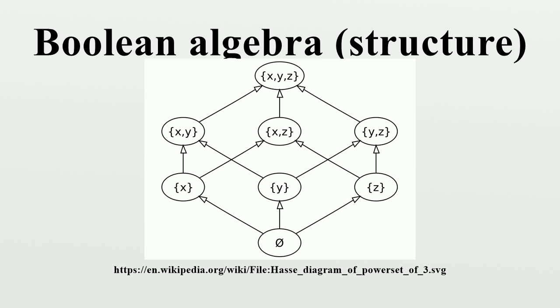∧ as and, ∨ as or, and ¬ as not. Expressions involving variables in the Boolean operations represent statement forms, and two such expressions can be shown to be equal using the above axioms if and only if the corresponding statement forms are logically equivalent.